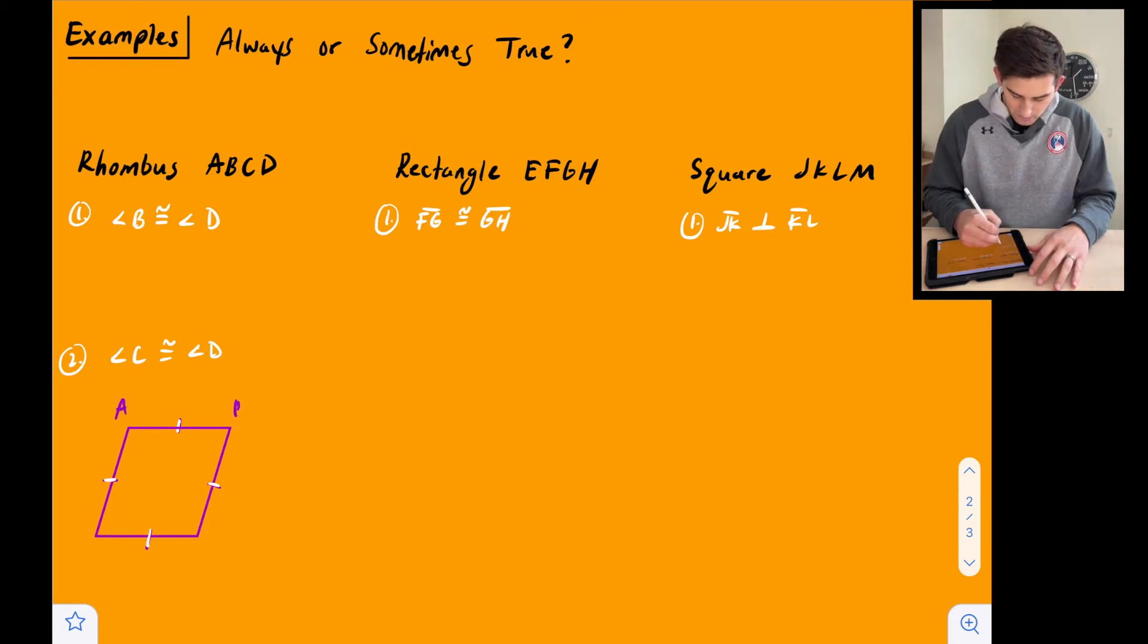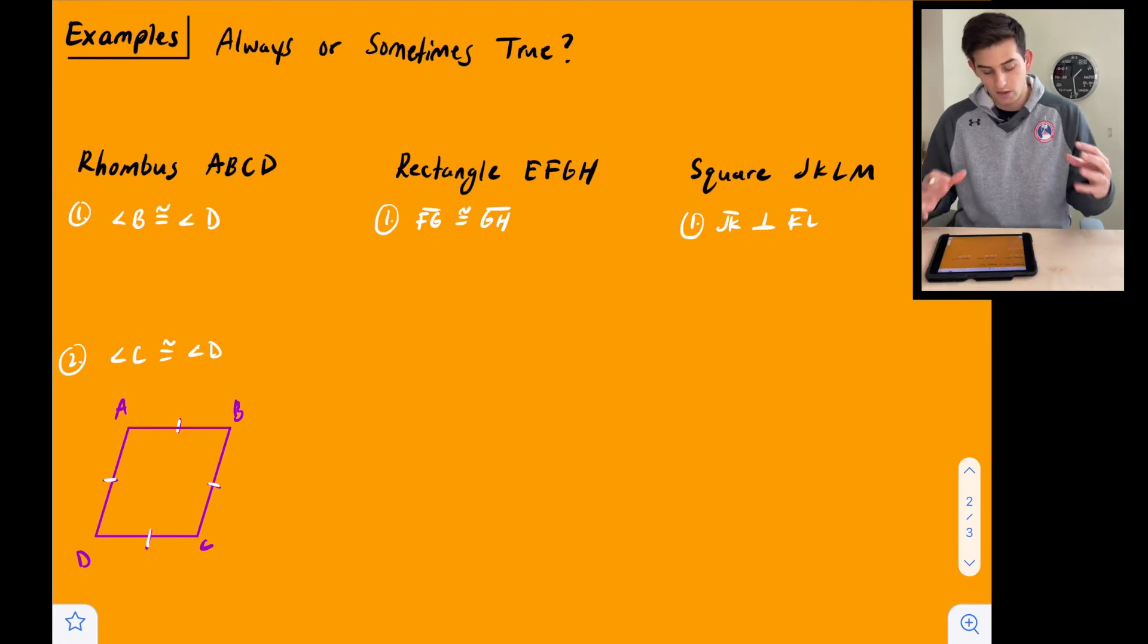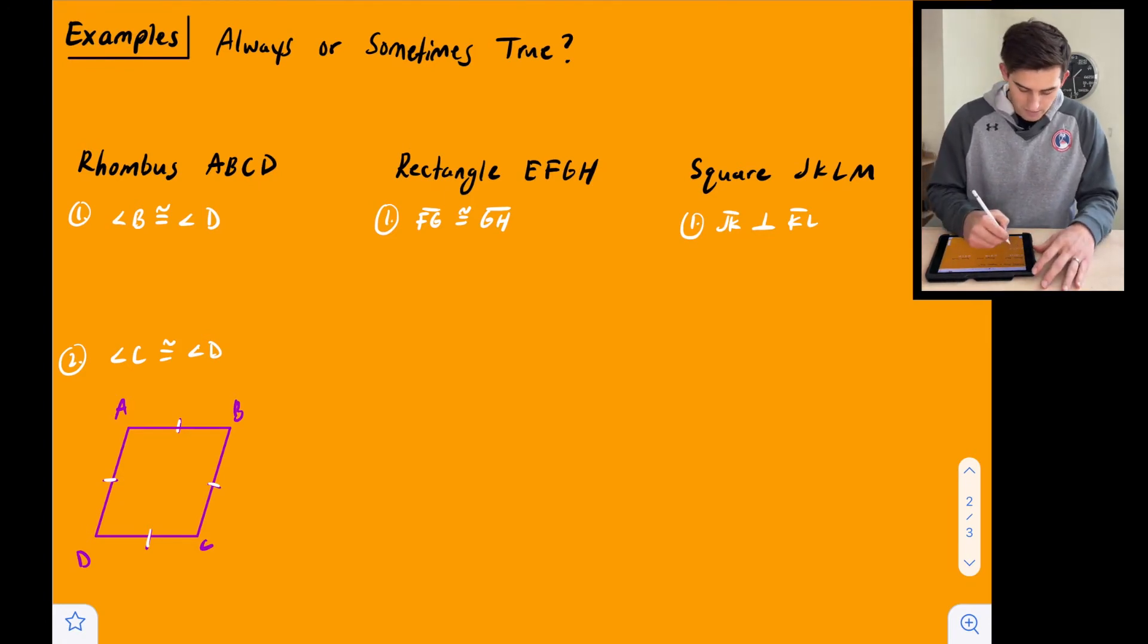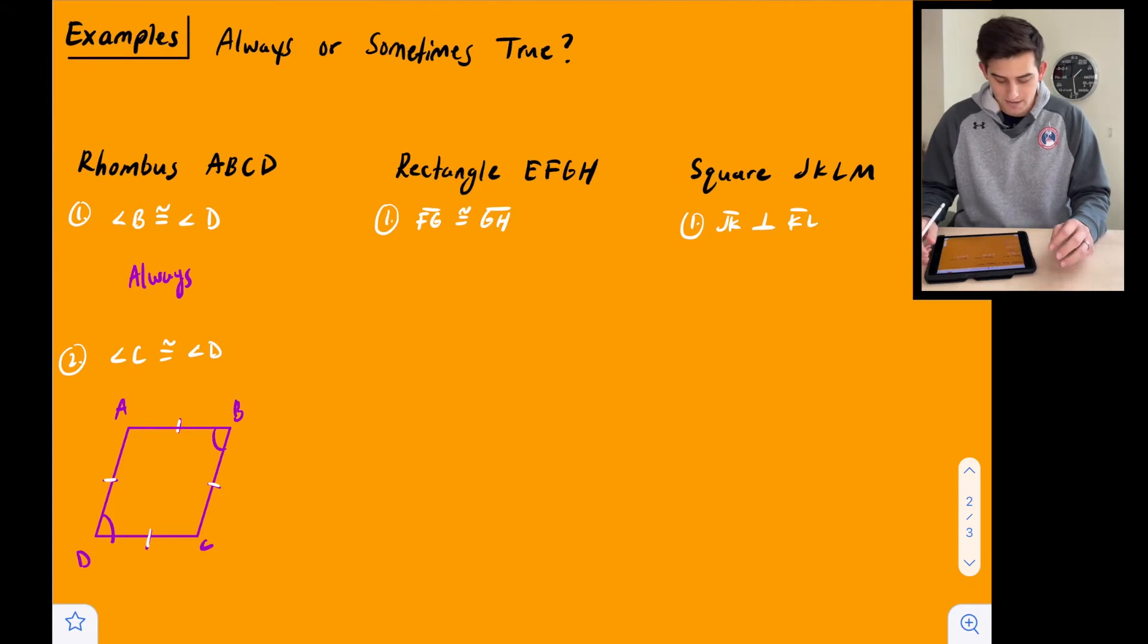Number one says, is it always or sometimes true that angle B is congruent to angle D. So angle B is here and angle D is here. And for this one, we're going to say always. Because remember in the video we did about rhombuses, we see that the opposite angles are congruent in a rhombus. Okay. So that one's always true.